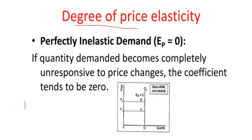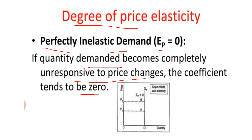The first degree is perfectly inelastic demand (Ep = 0): if the quantity demanded becomes completely unresponsive to a price change, the coefficient is zero. Even though price changes, there is no change in demand at all — we call this perfectly inelastic demand.